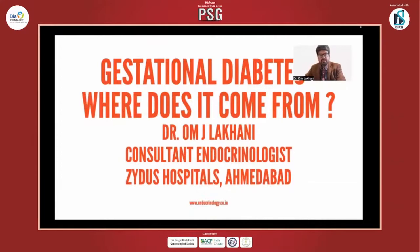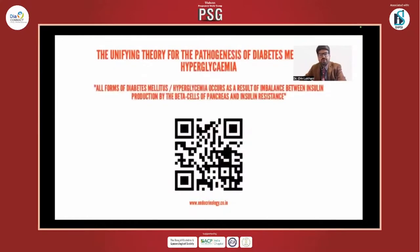What I'm trying to understand here is the pathogenesis of gestational diabetes, and that is what I'm going to focus upon. For those who follow me on social media, we have a presentation called the unifying theory for the pathogenesis of diabetes mellitus or hyperglycemia. You can use the QR code shown to see the whole video. The thesis we are generating is that while we divide diabetes mellitus into various subtypes, we also try to unify diabetes pathogenesis and understand the commonality between all these forms.